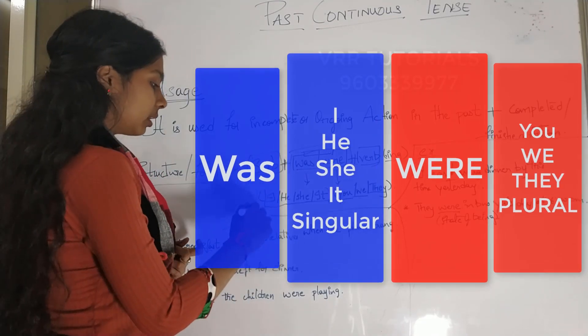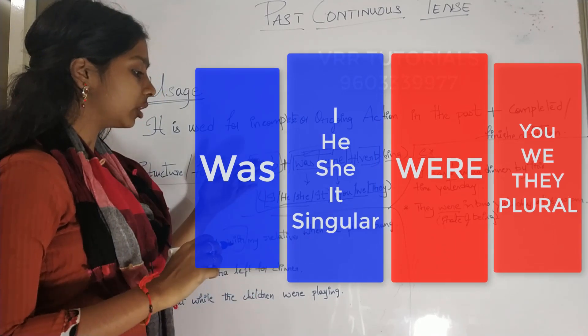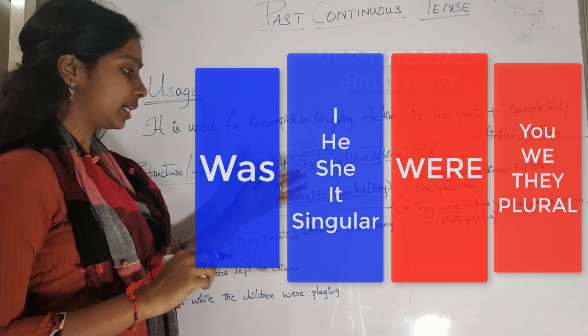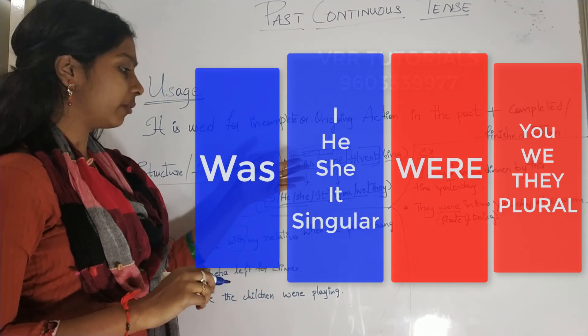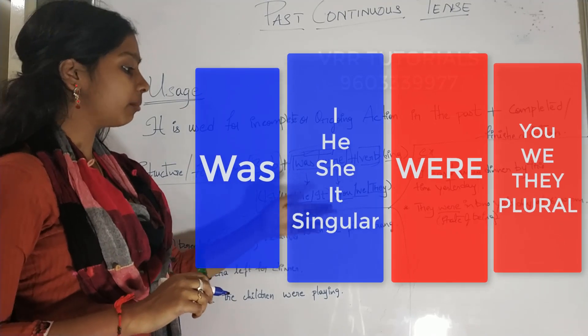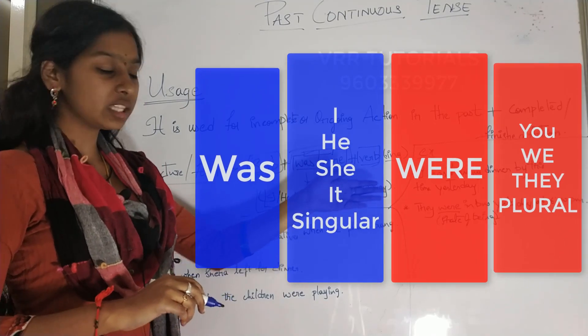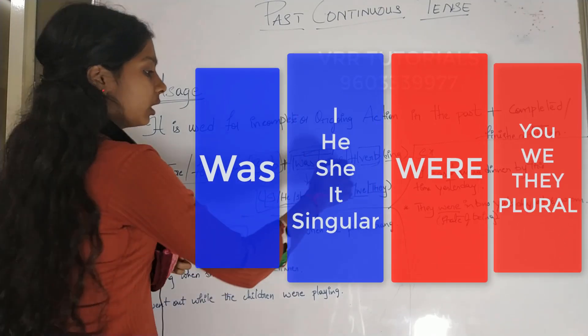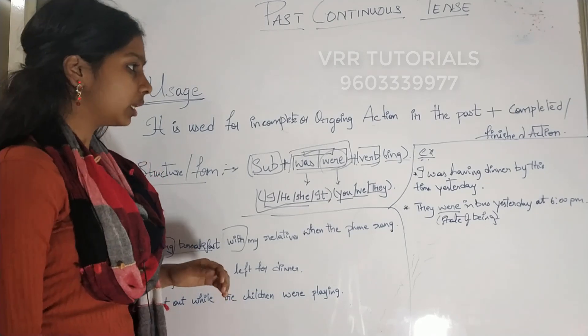Subjects I, he, she, it — for these four subjects we use 'was'. For subjects you, we, or they — these three subjects take 'were'.